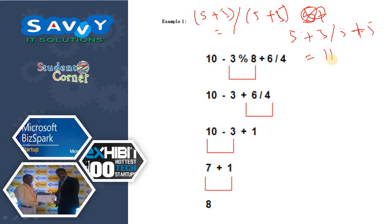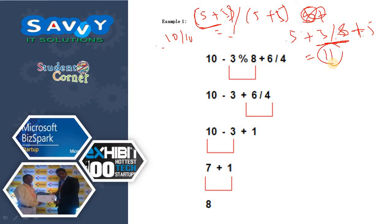In the BODMAS rule, first we evaluate brackets, then division, then multiplication, then addition, then subtraction. So in (5+5)/(5+5), first the brackets: 10/10 = 1. Without brackets, division has priority after brackets, so 5/5 = 1, then 5 + 1 = 6, then 6 + 5 = 11. That is the way the expression is evaluated. That is the reason why knowing the priority or precedence of an operator is essential.